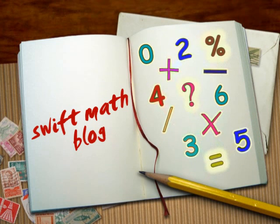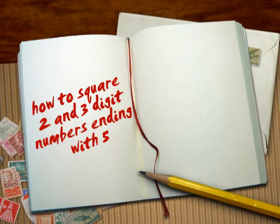Welcome to Swift Math Blog. This edition from our Swift Math Blog explains a simple, different, and most importantly, a swift way to square 2 and 3 digit numbers that end with the number 5.